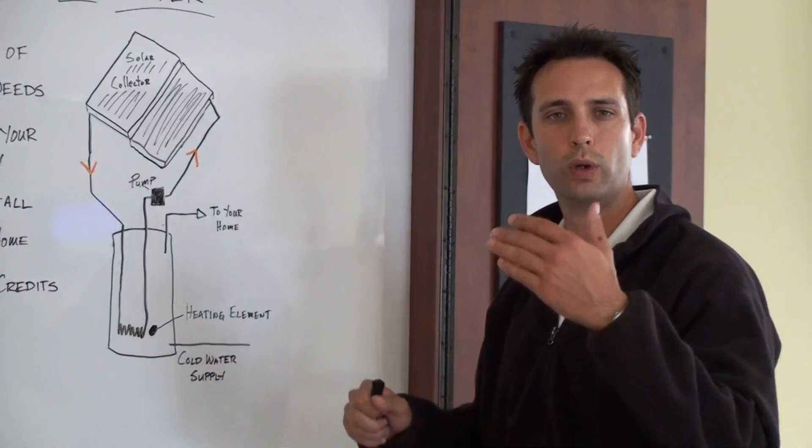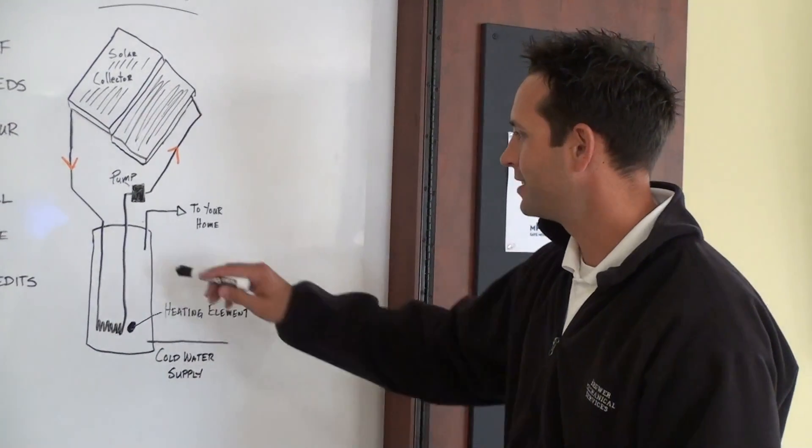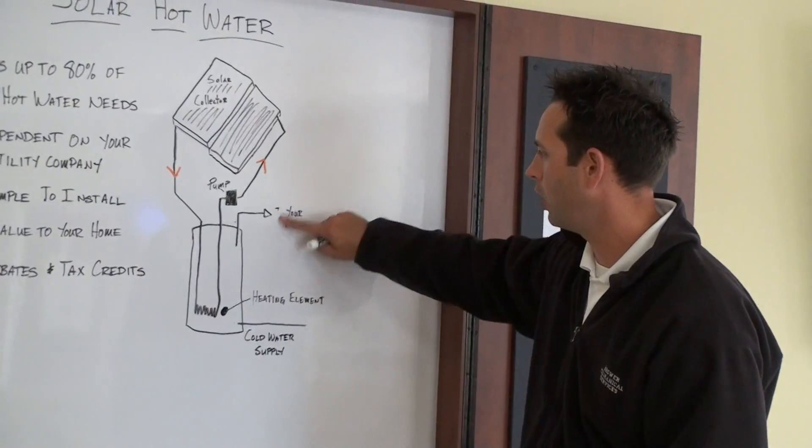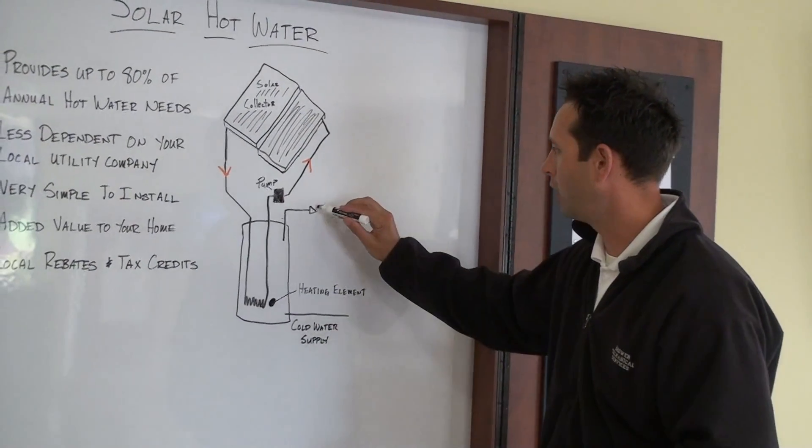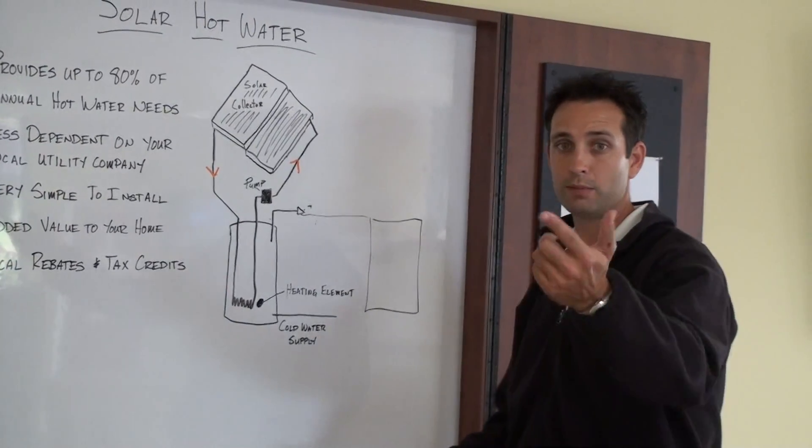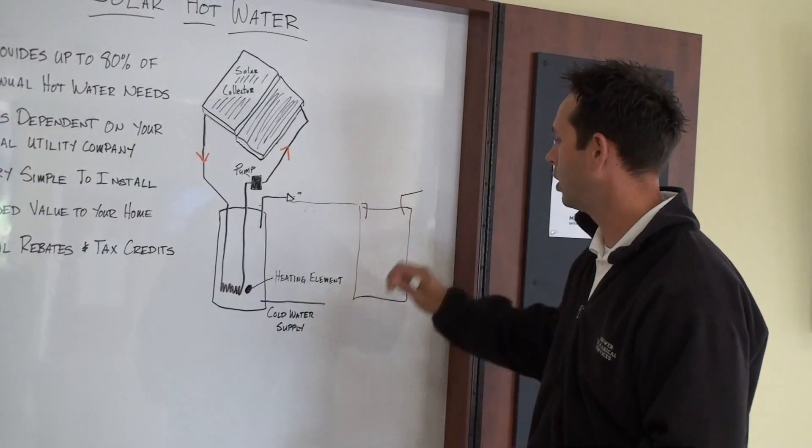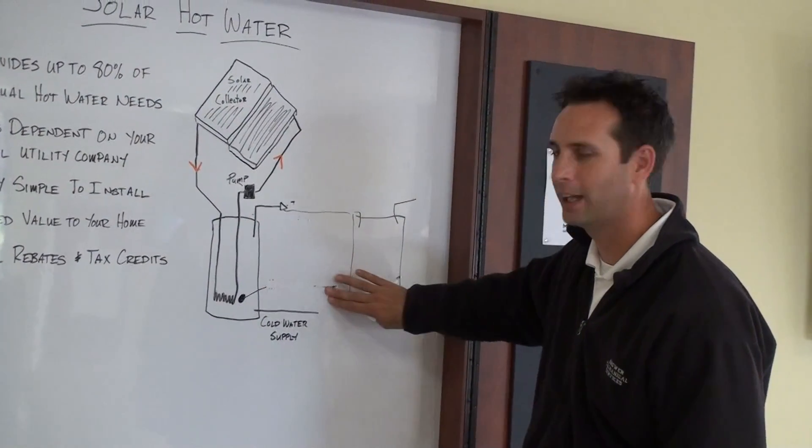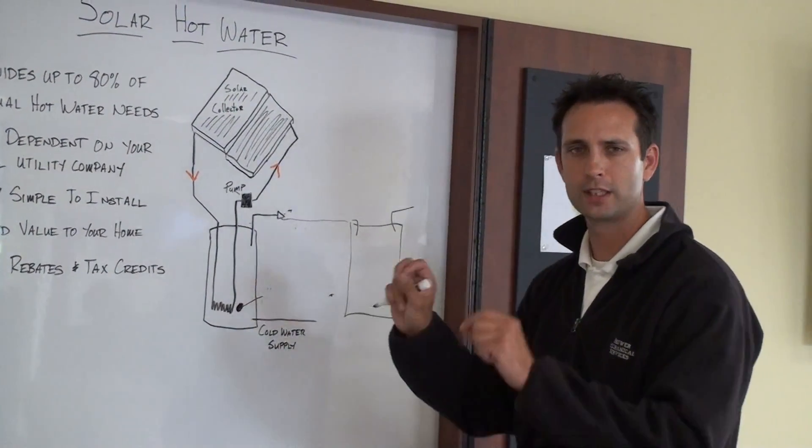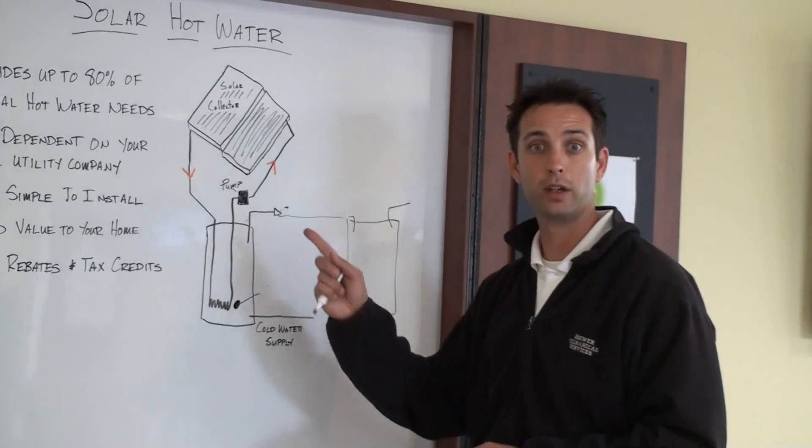Now one way you can really maximize the efficiency of your solar hot water system is instead of this water going directly into your home, it can go into what we call an auxiliary tank. Now an auxiliary tank can be the same tank that you have right now, like a gas water heater. So it goes into this tank and then back out to your home and that eliminates that heating element 100%. And that's the best way to maximize the efficiency of your solar hot water system.